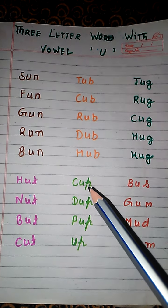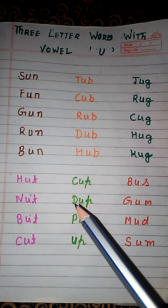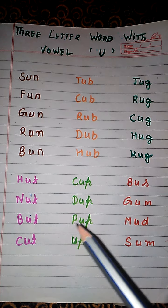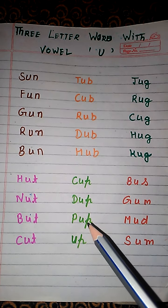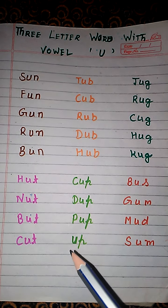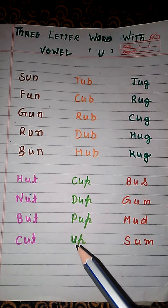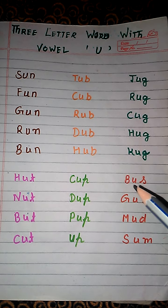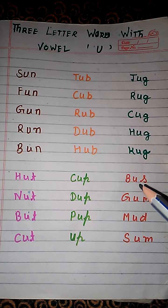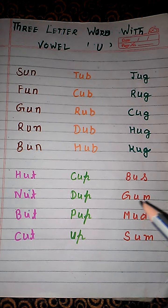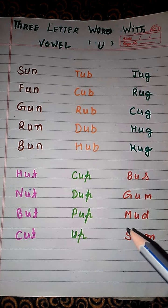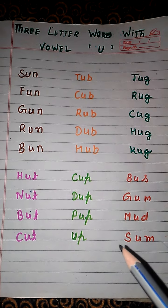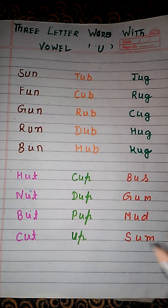K, U, G. Cup. D, U, G. Dup. P, U, P. Up. Next is B, U, S. Bus. G, U, M. Gum. M, U, D. Mud. S, U, M. Sum.